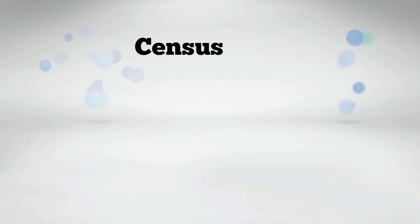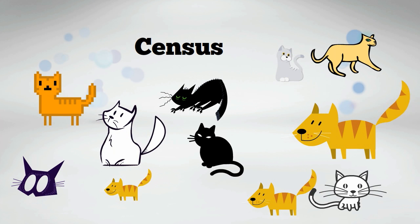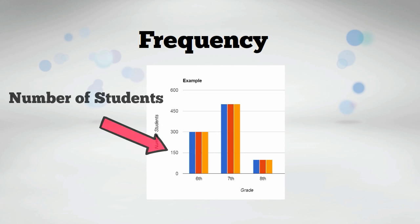Census is a collection of every member of a population. Frequency: the number of times an event occurs.